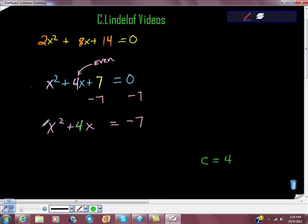So the c, this is a, b, c. So we want the c value to be 4. So what we have to do is take what we had and add 4 to it.